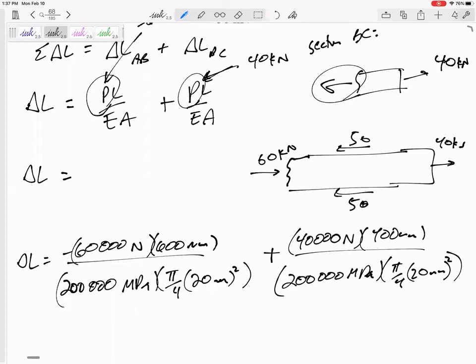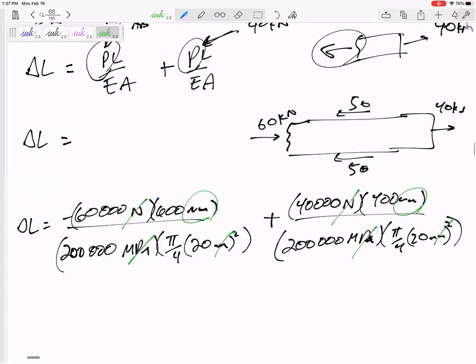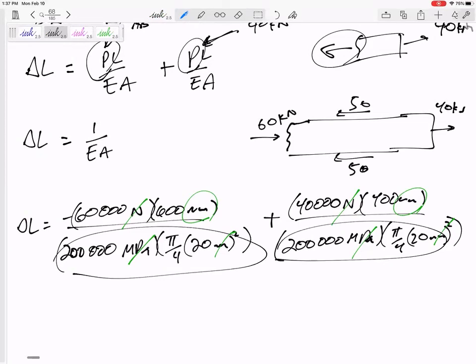That will give me my delta L. So the units newton, MPa, and millimeters squared cancel out. So my units for both of those terms are millimeters, so I could add them up. You probably could see that I could have factored that out and only multiplied the E and the A once. I could have said 1 over EA,